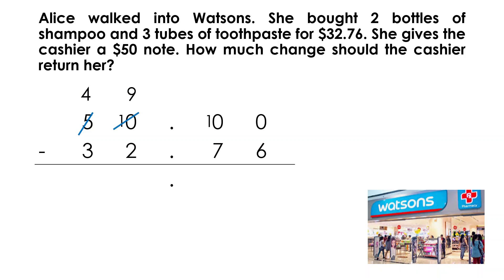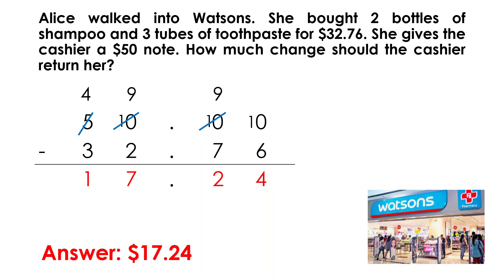Next, we need to borrow from the $0.10 position by putting a slash. Now, we write 9 as the remaining $0.10 value and one $0.10 is carried forward to the $0.01 position. Now, we can do the subtraction. 10 minus 6 is 4. 9 minus 7 is 2. And $9 minus $2 is $7. Finally, 4 tens minus 3 tens equals 1 ten. The final answer is $17.24.